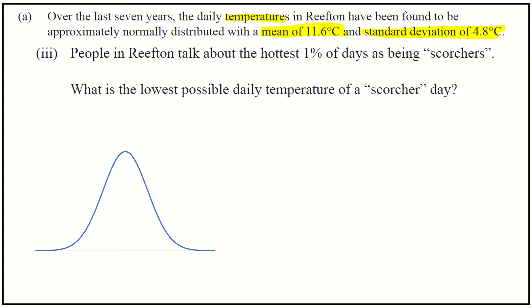So the first thing I'm going to do is just put that info on my diagram. I'll put my mean roughly in the middle at 11.6 and just write the standard deviation underneath. And what we've been asked is to talk about the hottest 1% of